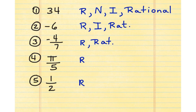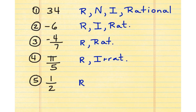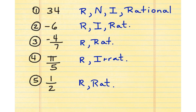Pi over 5 isn't rational. It isn't natural, and it isn't an integer. It is an irrational number. And finally, 1/2 is a real number and it is also a rational number. Now you have classified all of Jacob's numbers that he had for homework. It's a little difficult, but you're done.